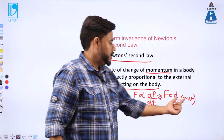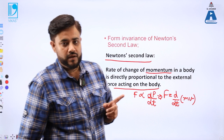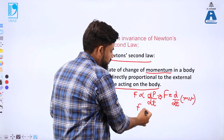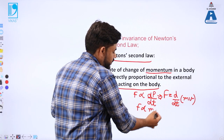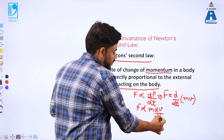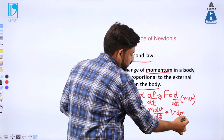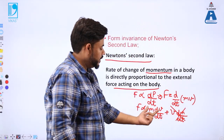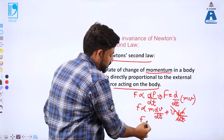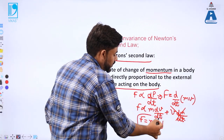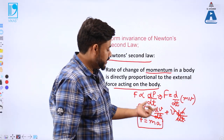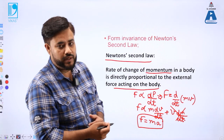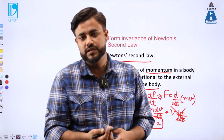We can differentiate this for two categories: when mass is constant and when mass is not constant. Applying the product rule, F is proportional to m(dv/dt) plus v(dm/dt). If mass is constant, the second term vanishes and you get F = ma. If velocity is constant, the first term vanishes and you get F = v(dm/dt), where dm/dt is the mass flow rate.